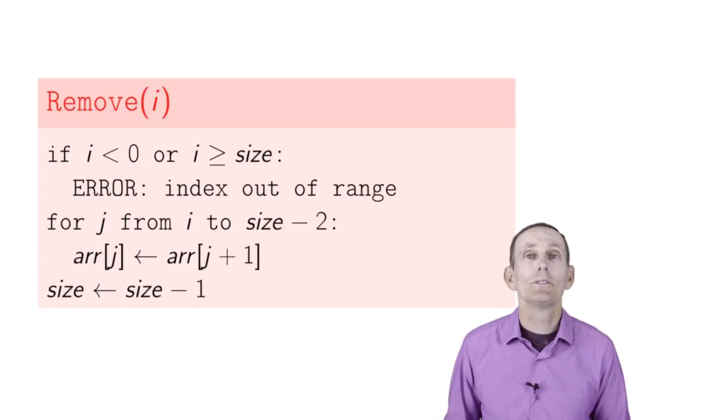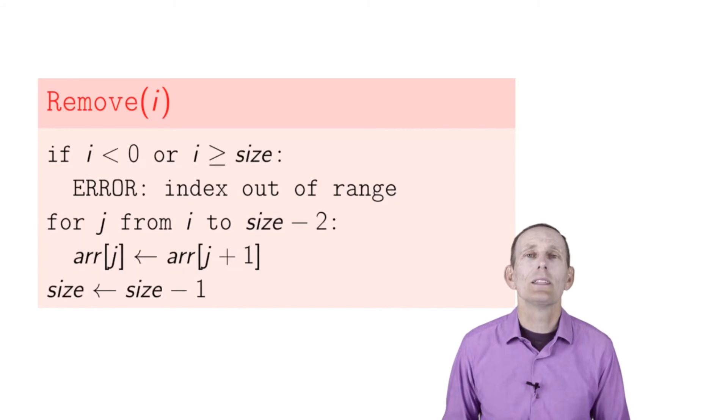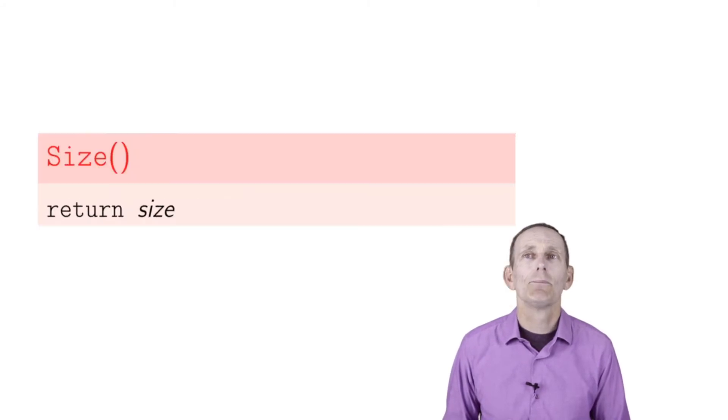Remove is fairly simple - check that our index is in bounds, and then go ahead through a loop, basically copying over successive elements, and then decrement the size. Size is simple - we'll just return the size.